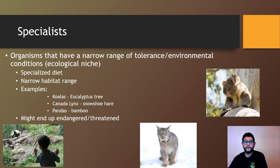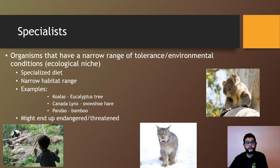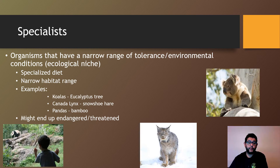Those other species tend to be specialists. Specialists are organisms that have a pretty narrow range for their ecological tolerance, environmental conditions, or ecological niche. So they would have a specialized diet. Some examples would be koalas and pandas — they have very specialized foods that they eat. Specifically, koalas only eat the leaves of the eucalyptus tree, pandas only eat the leaves from bamboo, and Canada lynx can only eat the snowshoe hare. If the range for that prey or food is limited, they may not do so well.